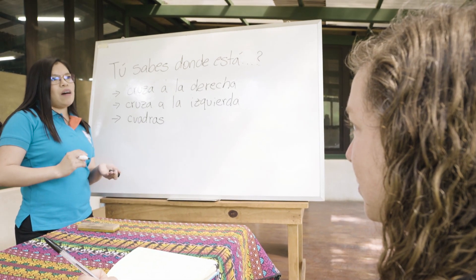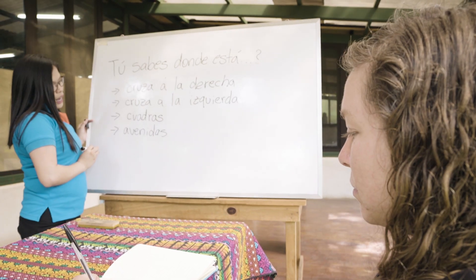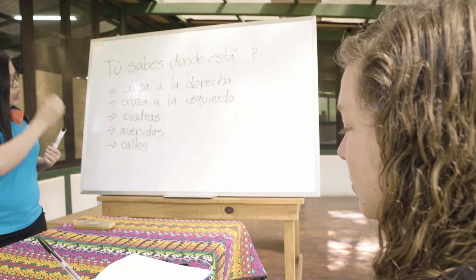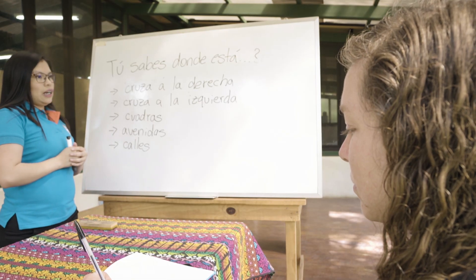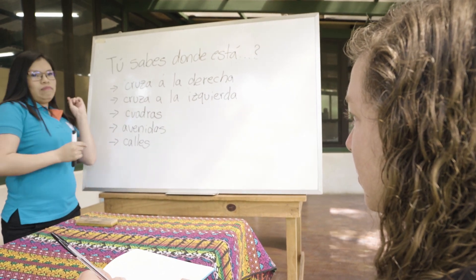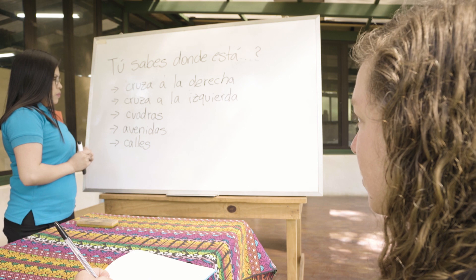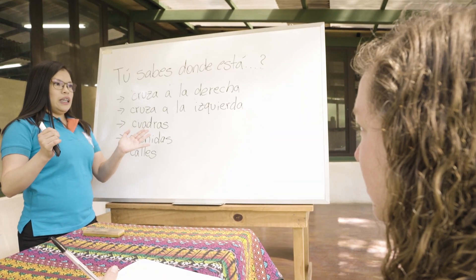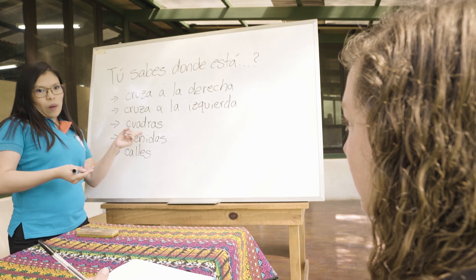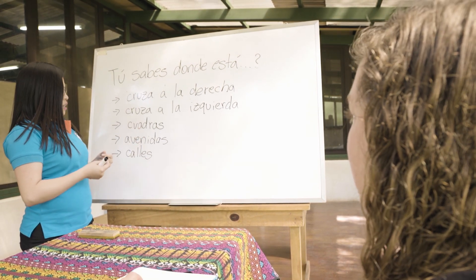Here it's more common to say avenidas or streets. So somebody could say: cruza a la derecha, cruza a la izquierda, camina — to walk — camina dos cuadras, tres cuadras. Or they can take you with them: camina a la izquierda, camina a la derecha, cruza dos cuadras or tres cuadras, and you will be there. Estás allí — es muy común también.